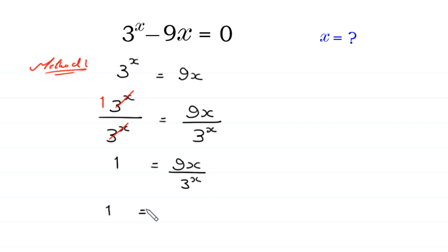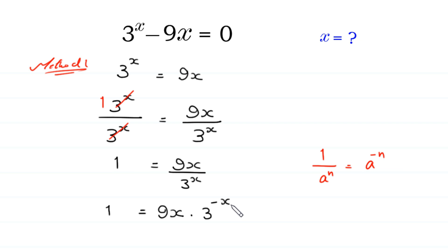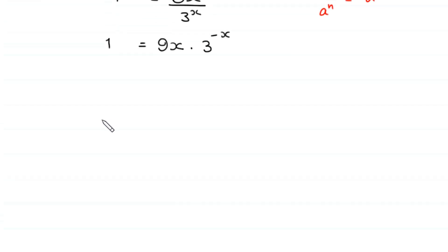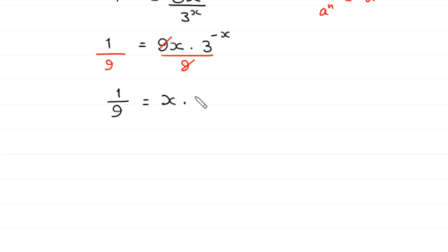Using the property that 1 over a^n equals a^(-n), we can write 9x over 3^x as 9 times x times 3 to the power negative x. Dividing both sides by 9 gives 1/9 equals x times 3 to the power negative x. Rearranging: x times 3^(-x) equals 1/9.